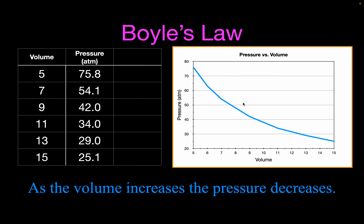This is a graph of that relationship — the Boyle's Law graph. On the y-axis we have the pressure in atmospheres, and on the x-axis we have the volume. You can see as we increase the volume, the pressure decreases. You should notice that this curve is not a straight line. The Boyle's Law graph showing the relationship between pressure and volume is a curved line, a decreasing curve.